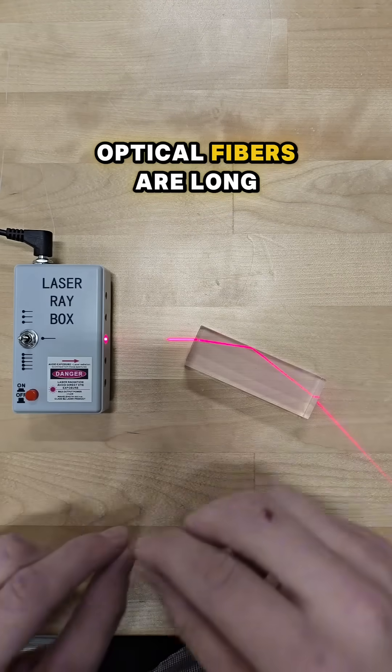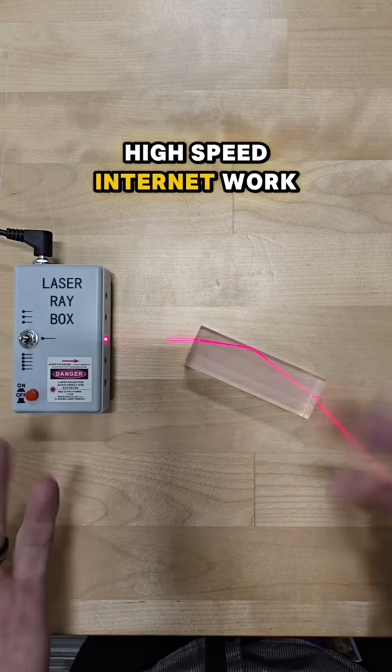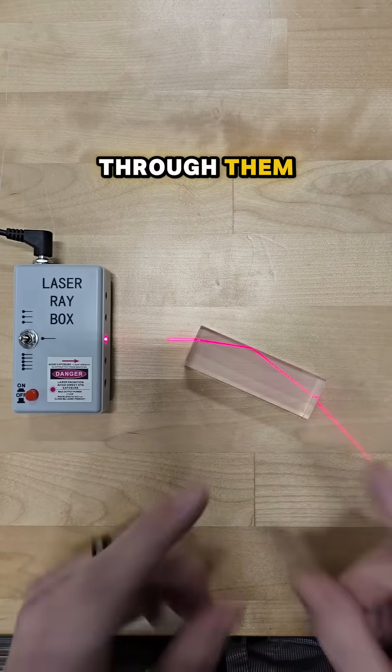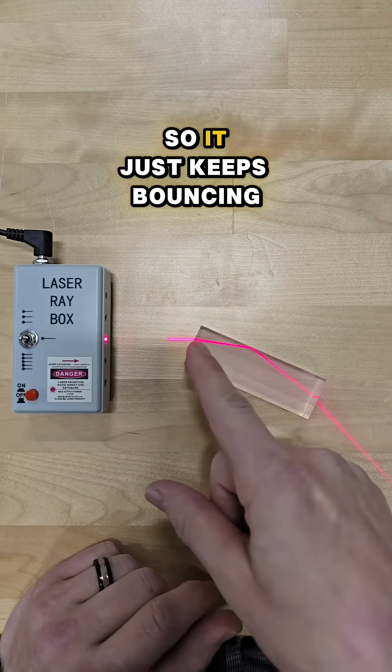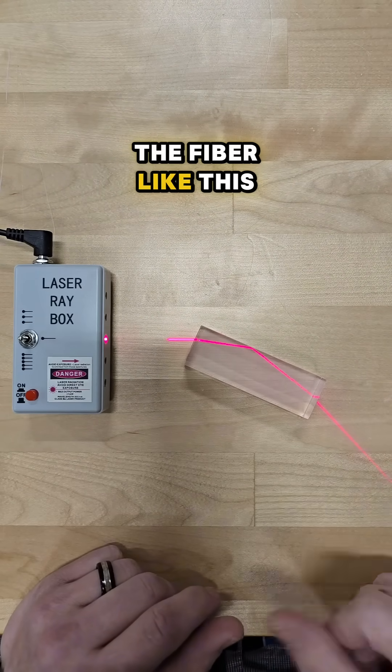Optical fibers are long strings of glass that make high-speed internet work because of light signals going through them. They work because of total internal reflection. The light goes out at a certain angle so it just keeps bouncing off of the edges of the fiber like this.